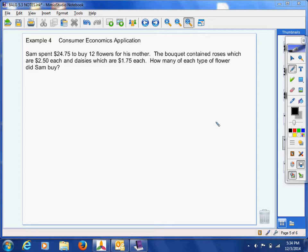We're going to do a consumer economics application. Let me read the situation to you. Sam spent $24.75 to buy 12 flowers for his mother. The bouquet contained roses, which are $2.50 each, and daisies, which are $1.75 each. How many of each type of flower did Sam buy?